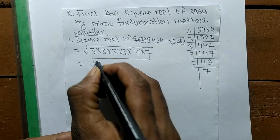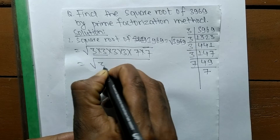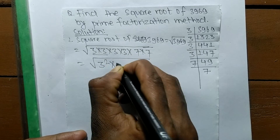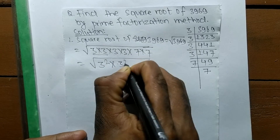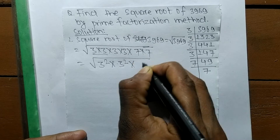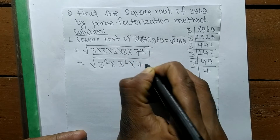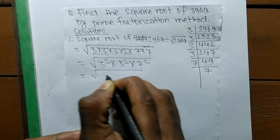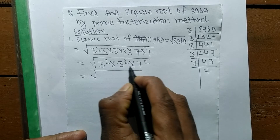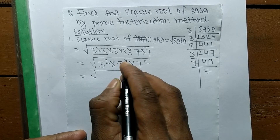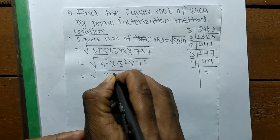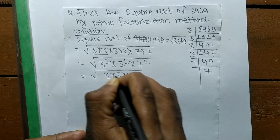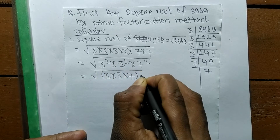Now we make pairs of the prime factors under the square root. 3 times 3 gives a square root of 3, again 3 times 3 gives a square root of 3, and 7 times 7 gives a square root of 7. As we look closely, all these numbers contain a square root.